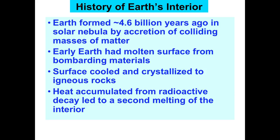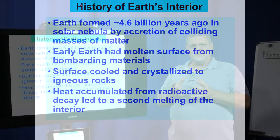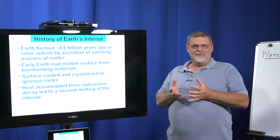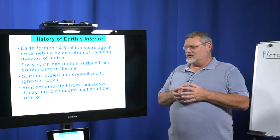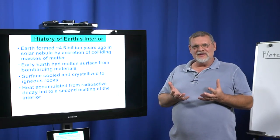As these bits hit the Earth, there was lots of heat generated — lots of kinetic energy converted into heat. So the early Earth had a molten surface from all this bombarding material. The surface cools, but the interior doesn't cool — it stays very hot. There's also radioactive material in there, uranium and other radioactive materials, and there's a lot of heat generated on the inside.